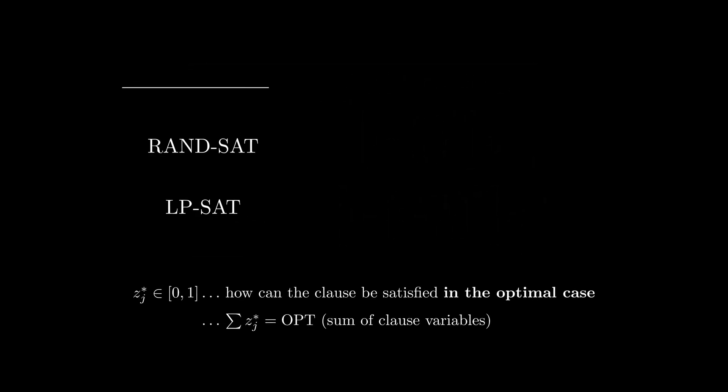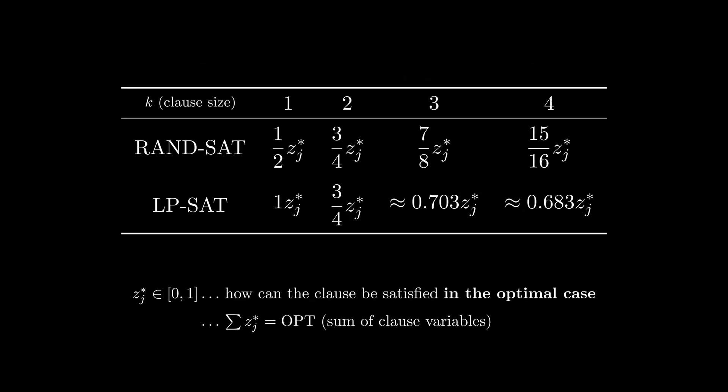Let's look at how the algorithms perform on clauses of varying size. As you can see, RAND-SAT seems to be performing better the larger the clause is. This is no surprise, since the more variables there are, the higher chances for RAND-SAT to pick one correctly. On the other hand, LP-SAT performs worse the larger the clause is, ultimately converging to the constant we arrived at during the proof. This prompts an interesting idea. Since RAND-SAT performs better for longer clauses and LP-SAT performs better for shorter ones, let's just average them.